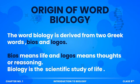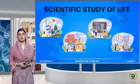اب ہم دیکھتے ہیں کہ biology کیا ہوتی ہے. Biology دو Greek words سے مل کے بنی ہے، یعنی biology is originated from two Greek words, یعنی bios and logos. Bios means life and logos means thought or reasoning. اس کا مطلب یہ ہوا کہ ہم biology کو define کر سکتے ہیں کہ biology is the scientific study of life.